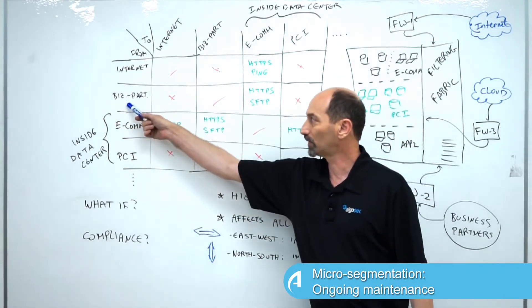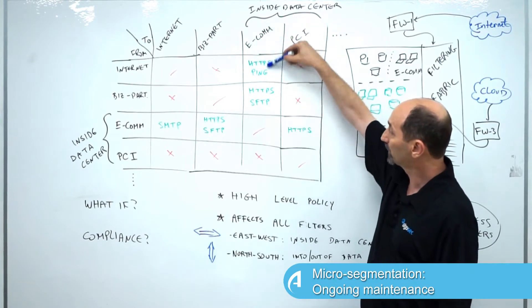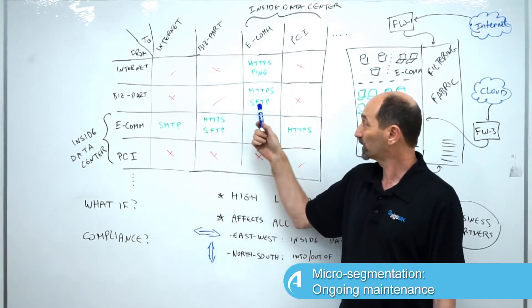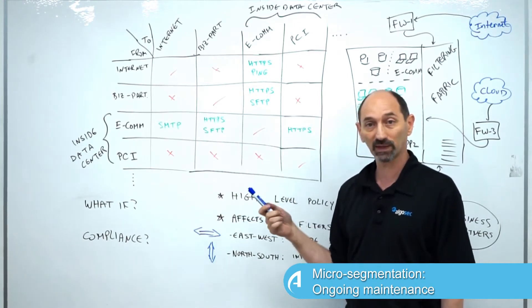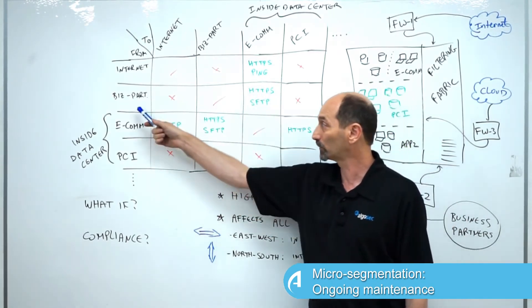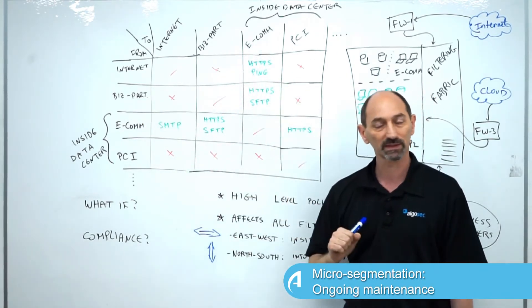The way to read this matrix is that traffic coming in from this zone, let's say from the business partner zone, and trying to reach this column is legitimate if the services being sent through that direction are listed inside the cell. So we're allowing from the business partner network to the e-commerce area these two services.